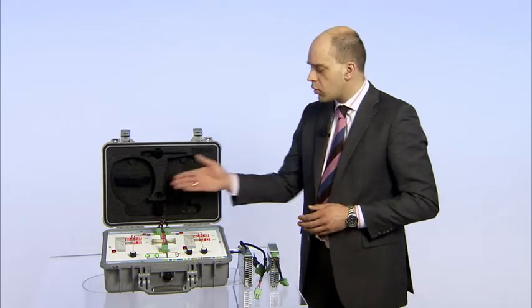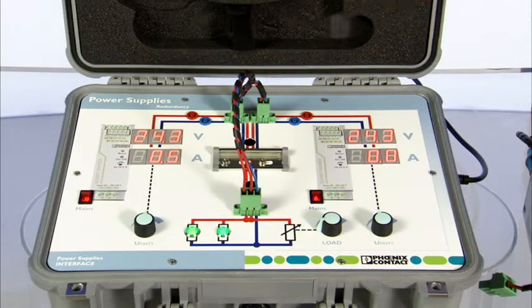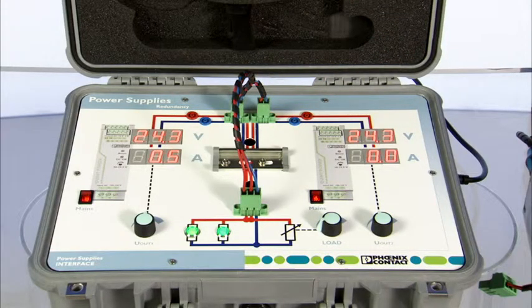Let's first take a look at the preventative function monitoring. To start with, both power supply units are connected in parallel. The connecting cable is used for this purpose and a load of two amps is set.